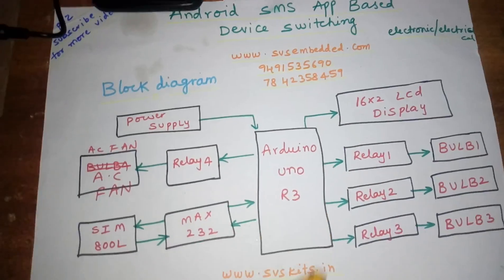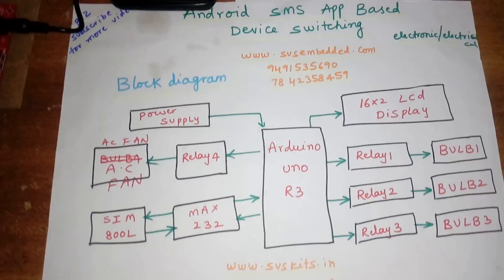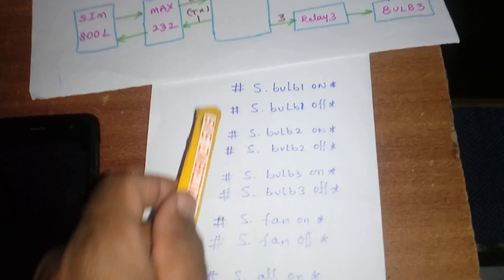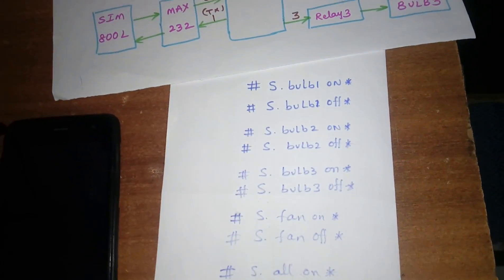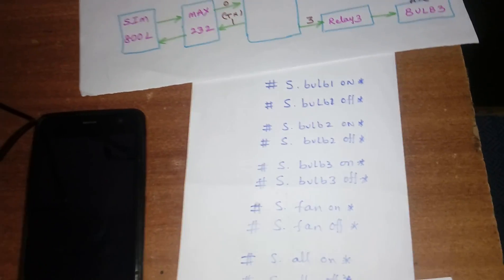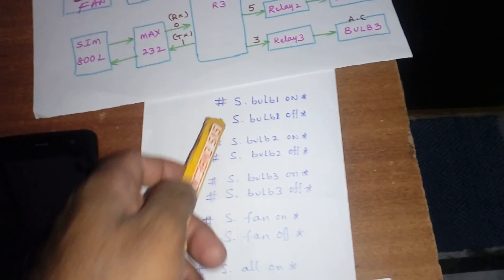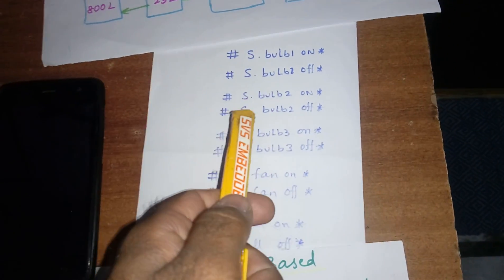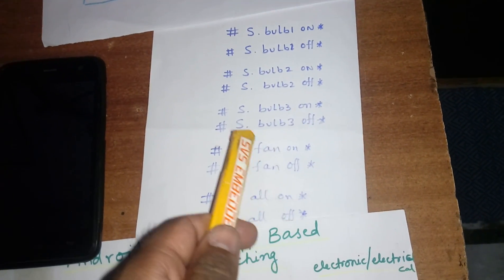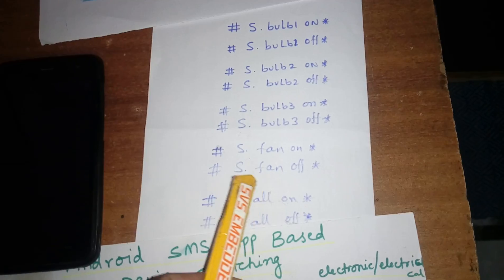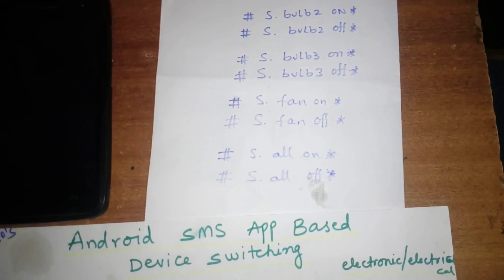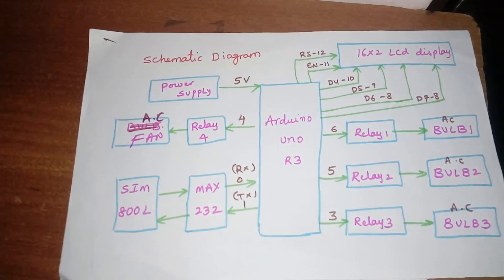These are the SMS commands: capital S dot B-U-L-B, space, bulb one, space O-N — all in capital letters. Commands include: bulb 1 on, bulb 1 off, bulb 2 on, bulb 2 off, bulb 3 on, bulb 3 off, fan on, fan off, all on, all off — where 'on' and 'off' should be capital letters.